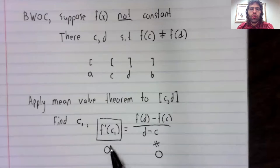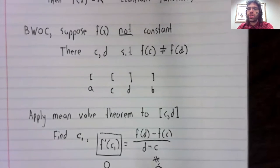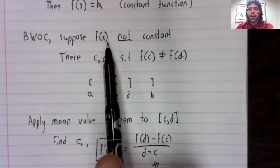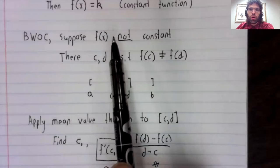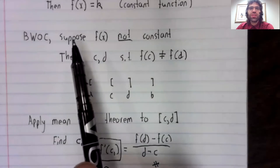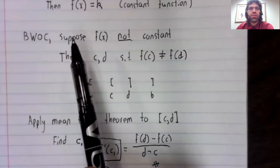So zero equals a non-zero number, contradiction. And this assumption we made must be false. This supposition cannot be true because it leads to a contradiction.